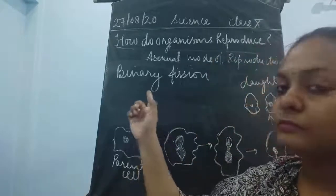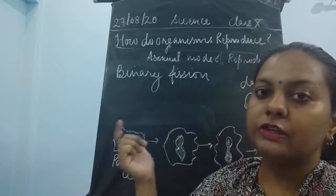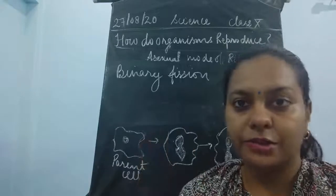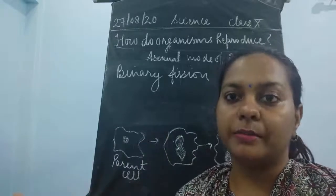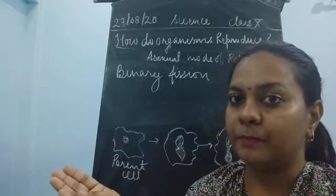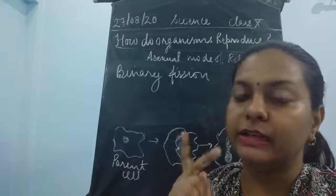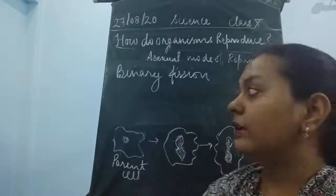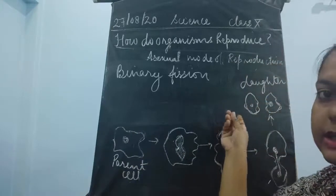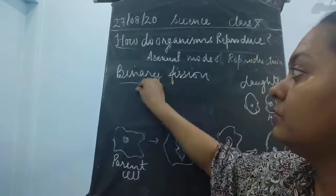Fission means division — a cell divides into two or more. If one cell divides into two daughter cells, it is called binary fission, since 'binary' means two. So when a parent cell splits into exactly two new cells, that process is binary fission.